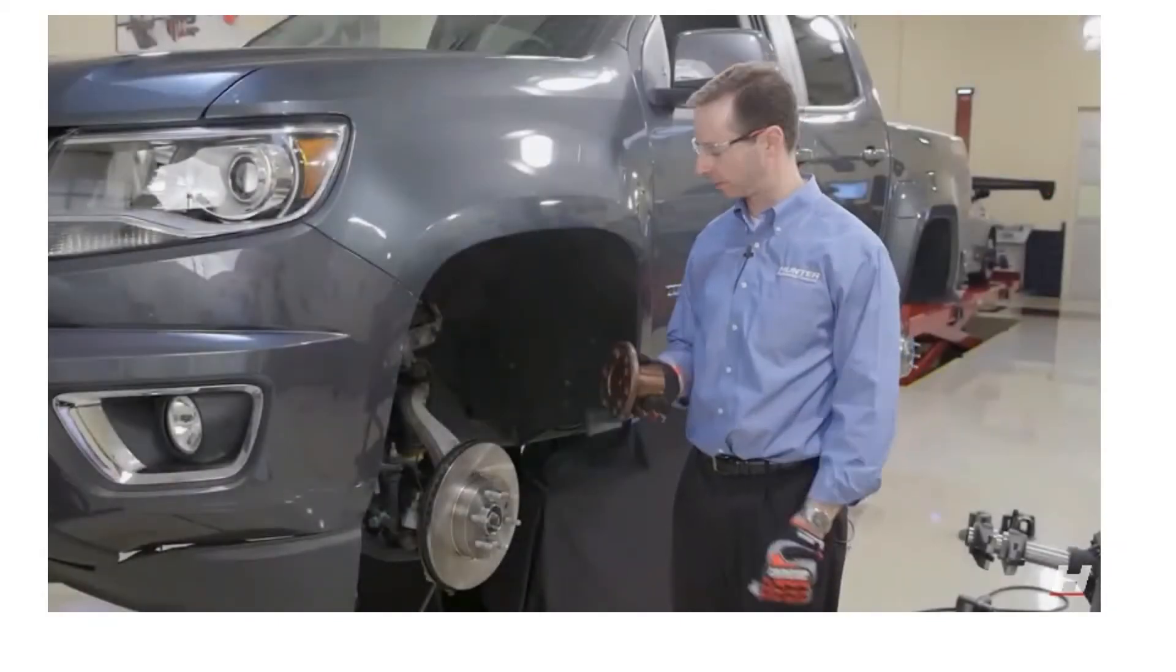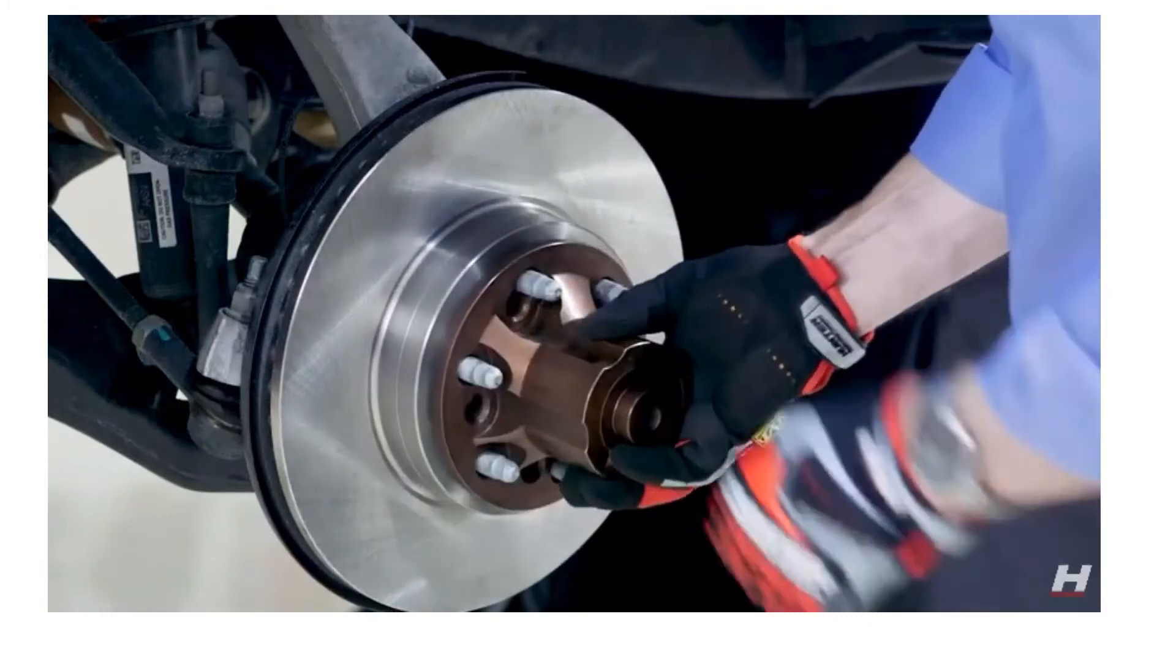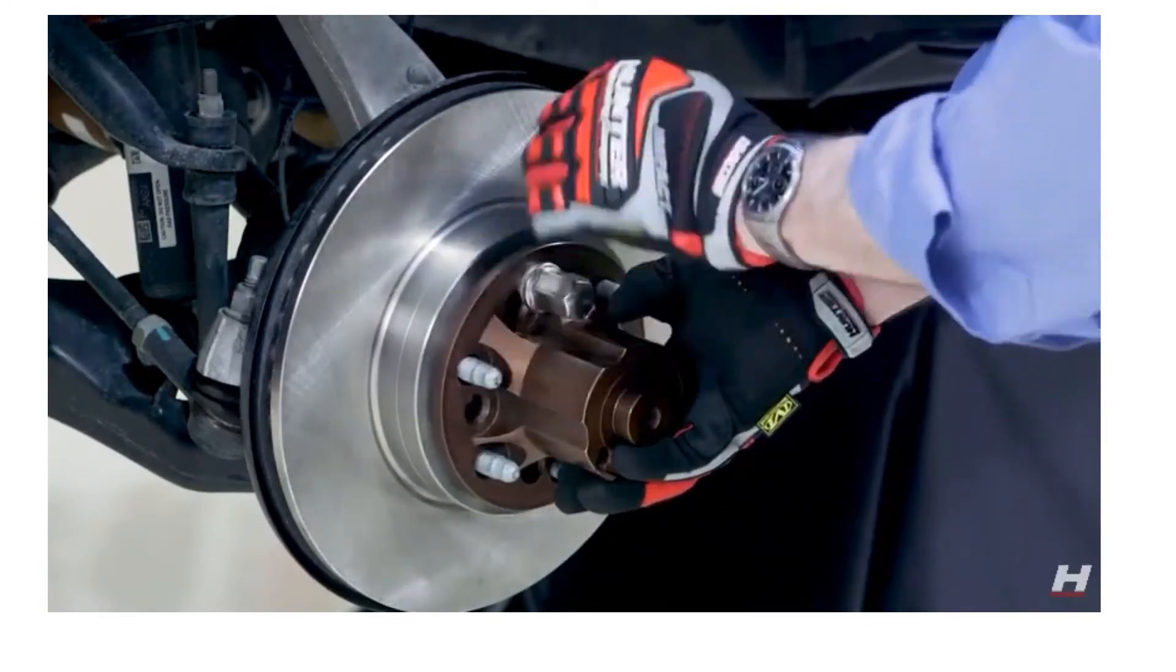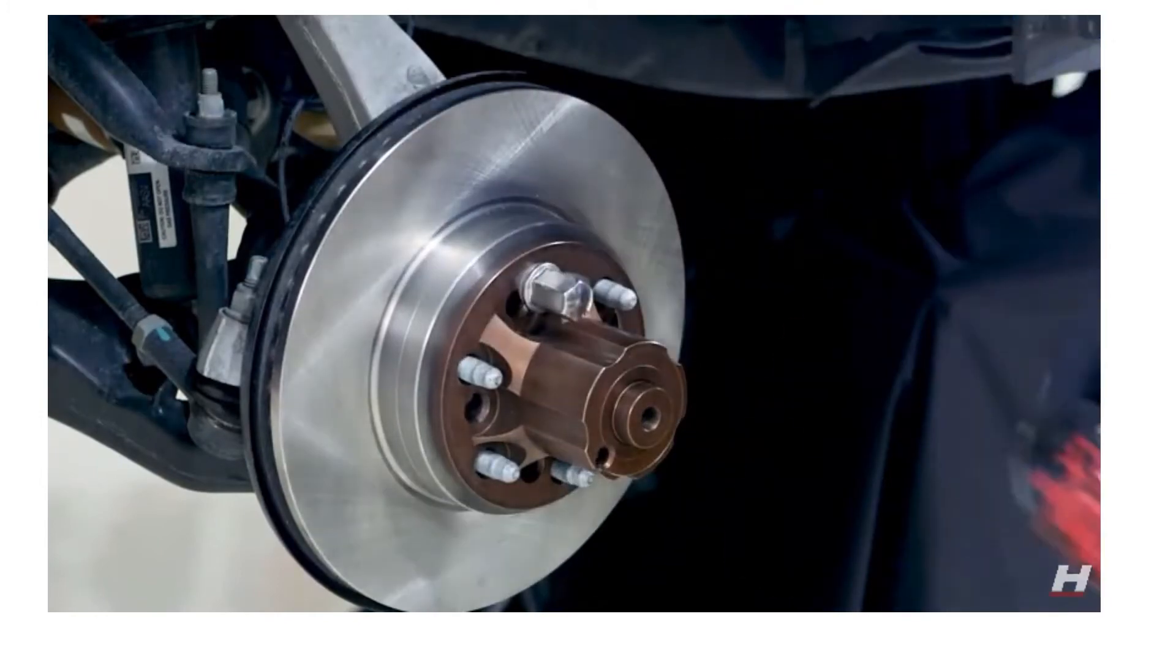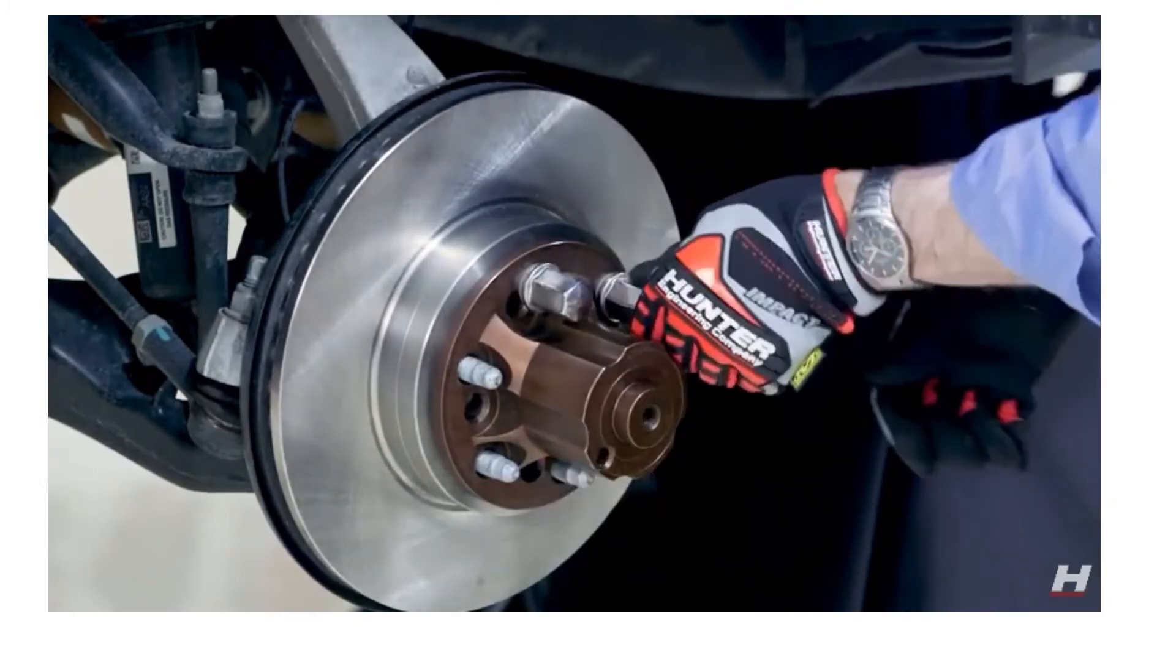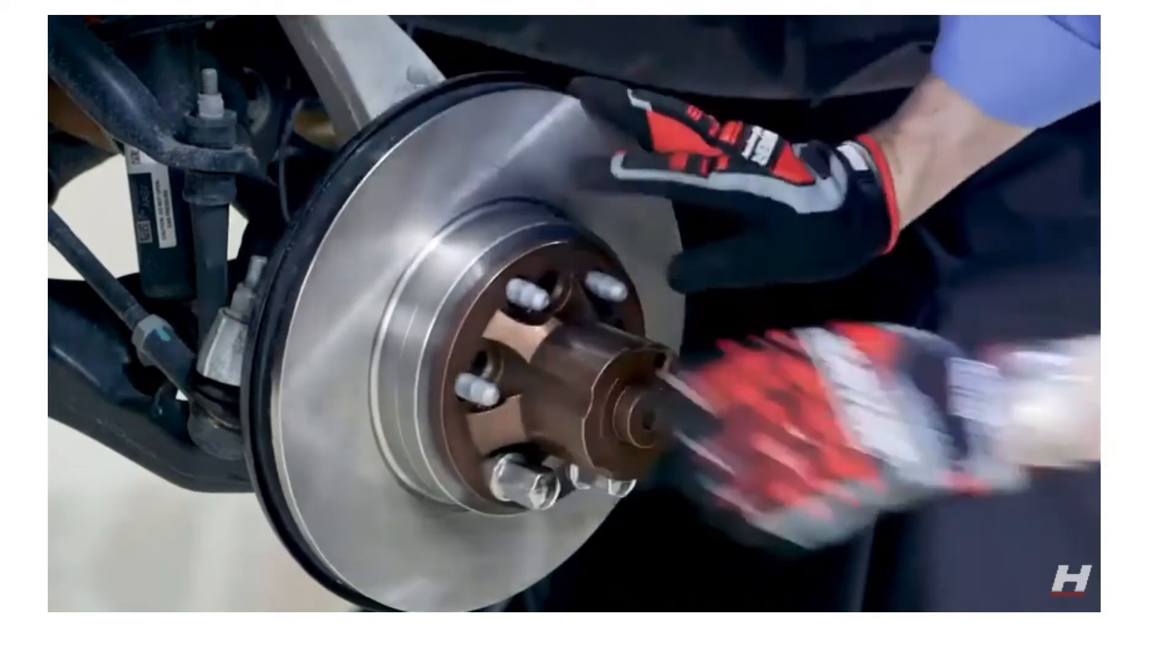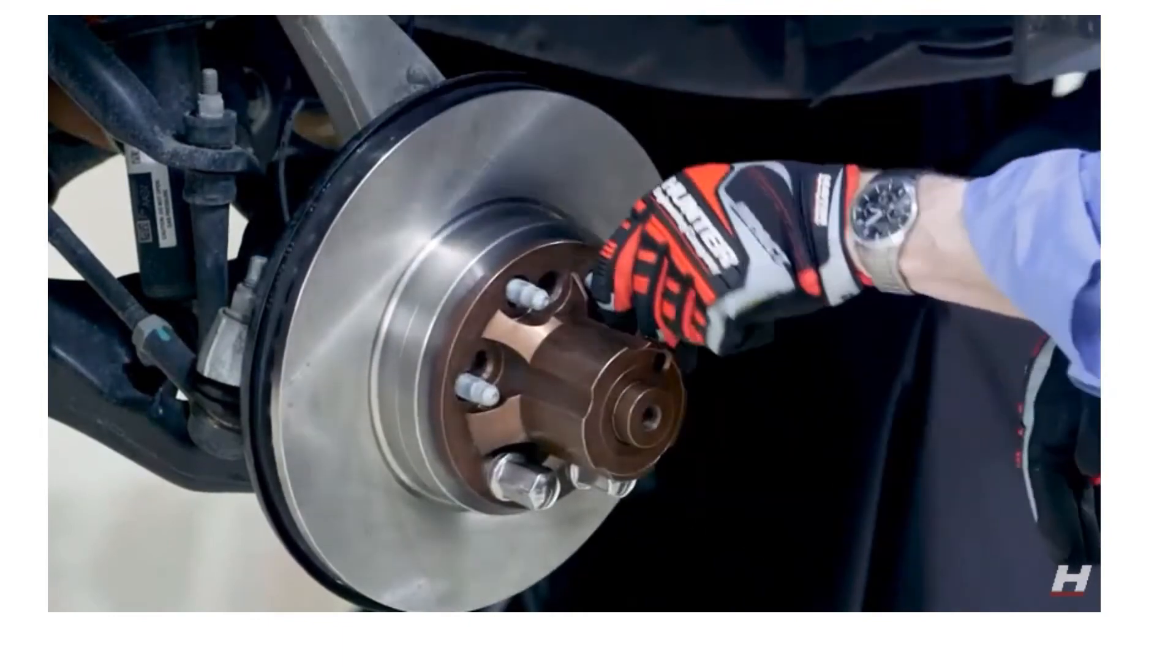Now that we've picked the right adapter all we have to do is mount it to the vehicle. In this case it's a six lug vehicle so I'm going to use four of the lugs off the vehicle. The lathe does also include lug nuts if you need them. In this case I'm okay.